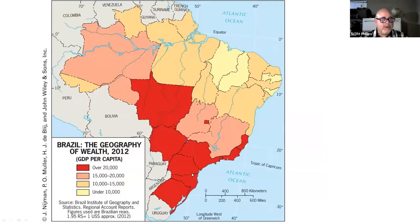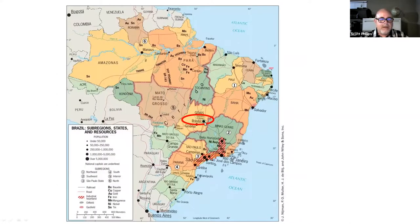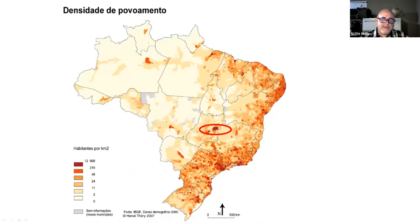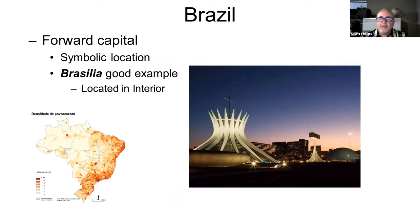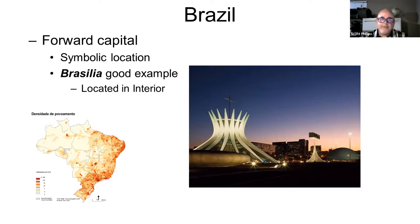This map shows the wealth geography of Brazil — poorer in the north, richer in the south. There's a notable dot in the interior: Brasilia, the capital of Brazil. While almost everyone in Brazil lives near the coast, the capital was intentionally moved to the interior in the late 1960s and 70s as a symbolic move to unify the interior with the coastal regions where most people live. When a country places its capital somewhere for a symbolic reason like this, it's called a forward capital.